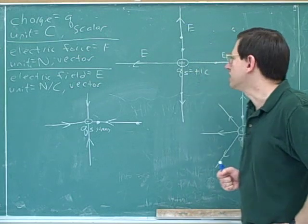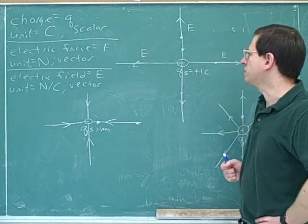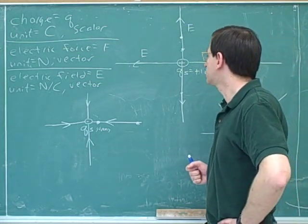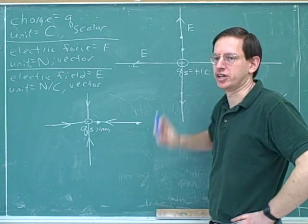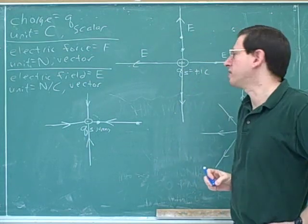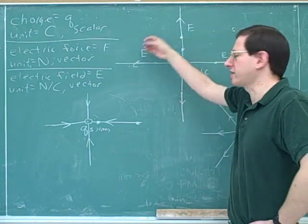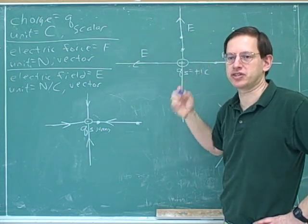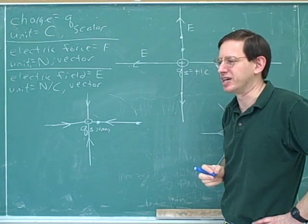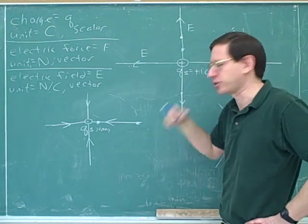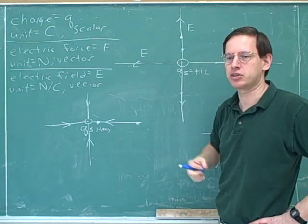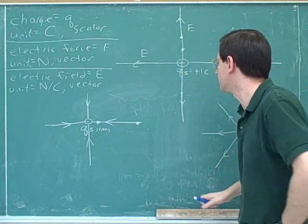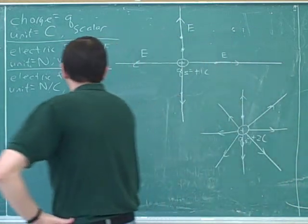What we're going to do now is draw surfaces around the source charges and then count how many electric field lines go through that surface, because we're working up to the concept of electric flux. So we have to think about putting a surface around the positive or negative charges.